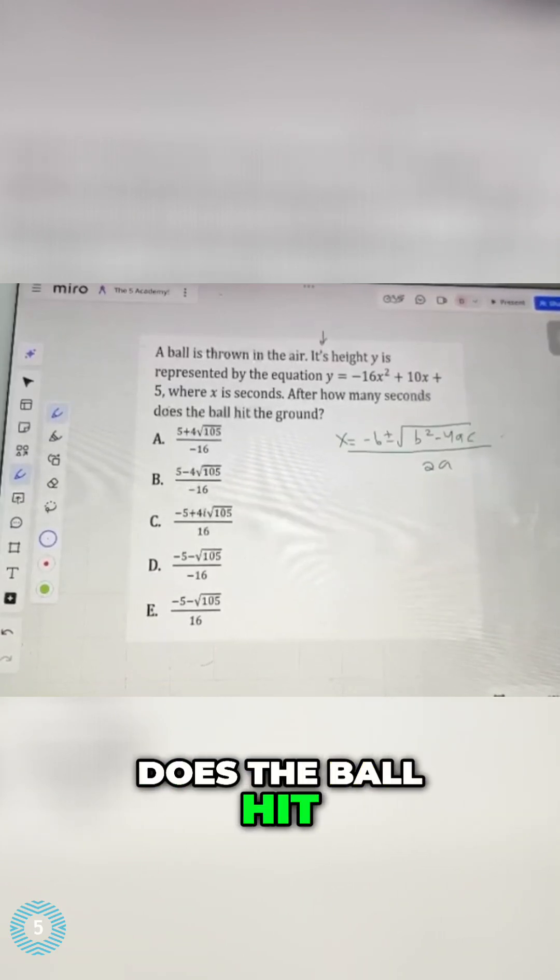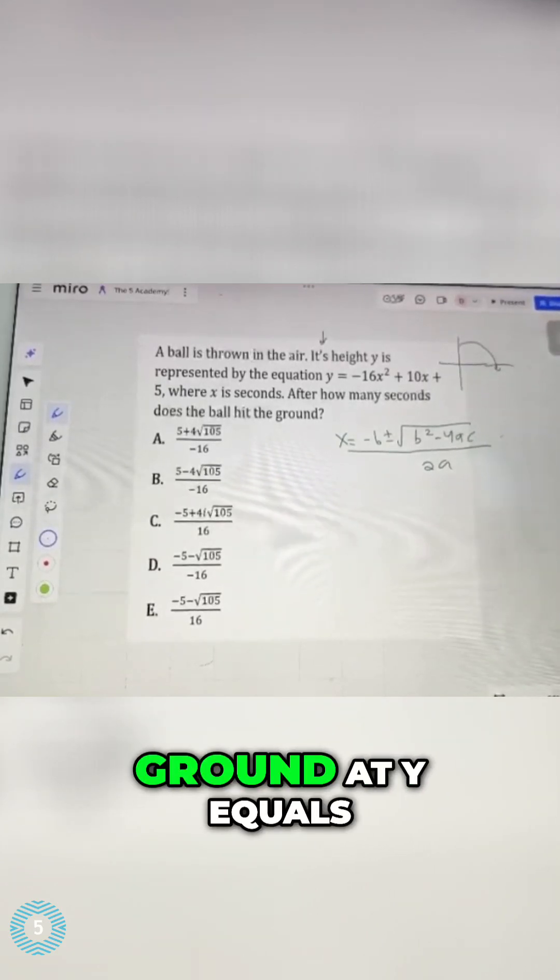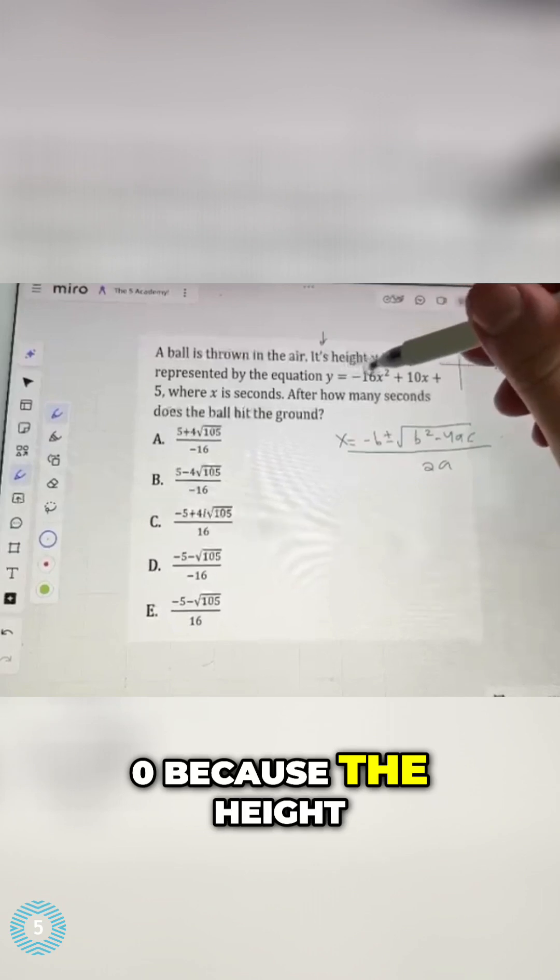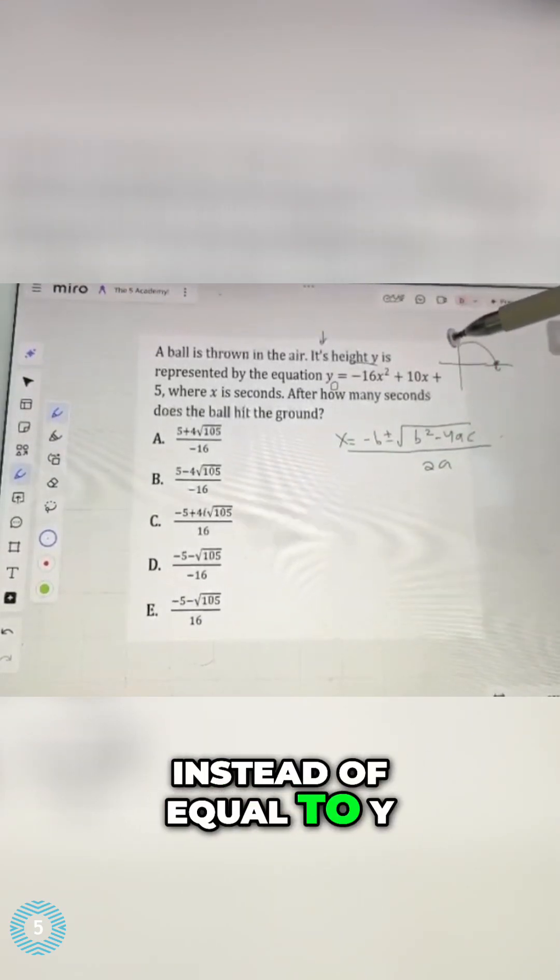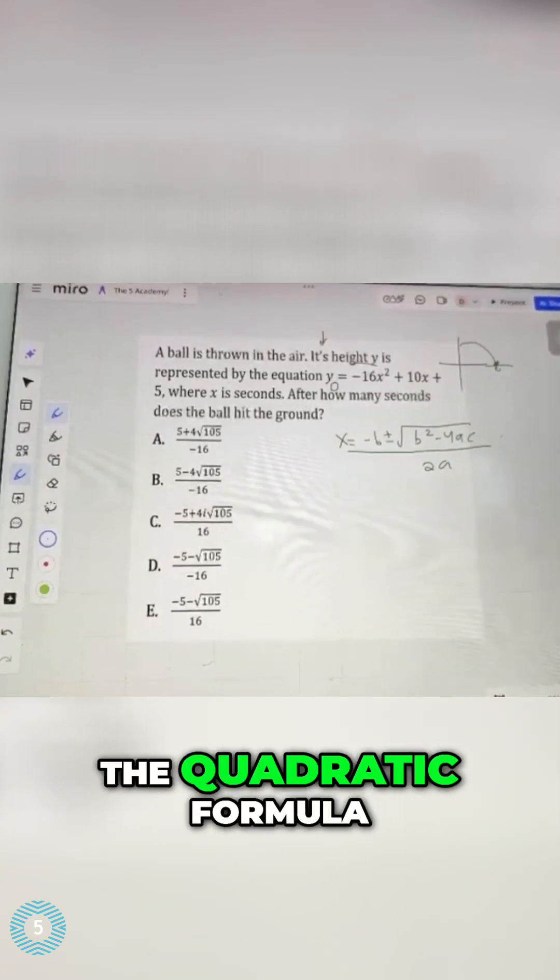After how many seconds does the ball hit the ground? The ball hits the ground at y equals 0 because the height is y. So I'll set this equation equal to 0 instead of equal to y. And now I'll be able to solve using the quadratic formula.